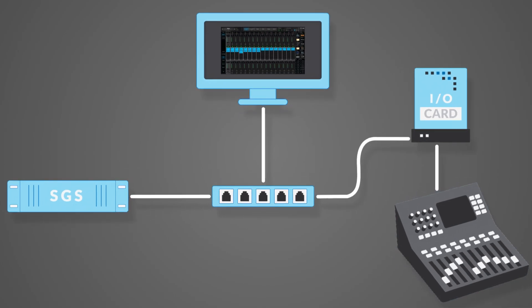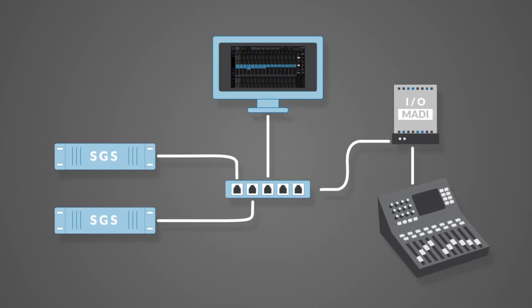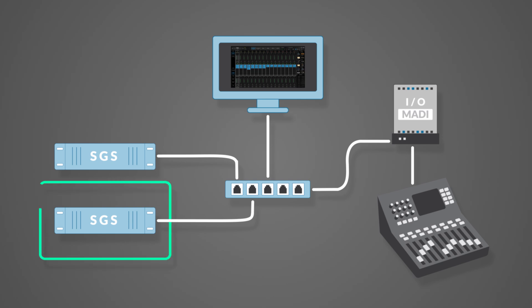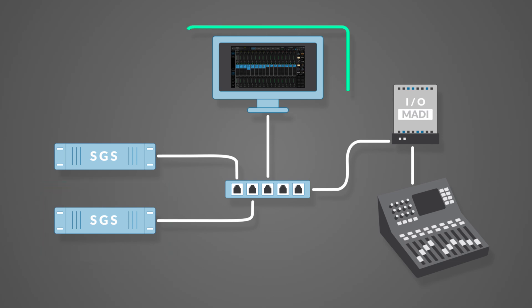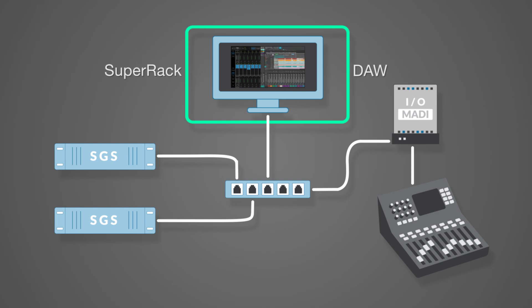Let's look at one more common SoundGrid setup: SuperRack SoundGrid with a console expansion card and second server. In this setup, a MADI I/O provides up to 128 SoundGrid channels, serving the stage preamps, monitor, and front-of-house. A second server has been added to provide complete processing redundancy. The host computer can also run a DAW for recording and virtual sound check.